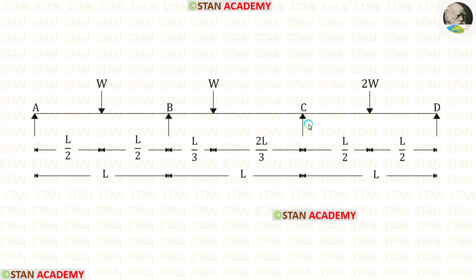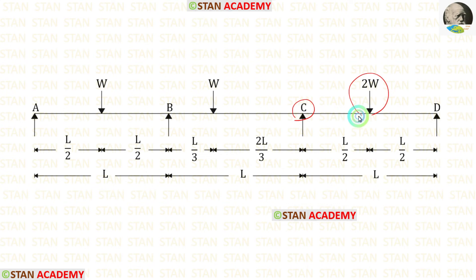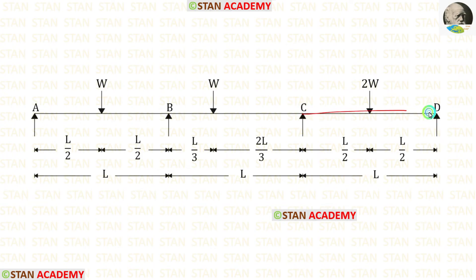Now let us take span CD. In span CD, we have a centrally applied point load of 2W. In joint C, there will be a plastic hinge, and under the point load there will be a plastic hinge. At point D, there will be no plastic hinge because it is a simply supported end. Let us take this span and make the third mechanism.